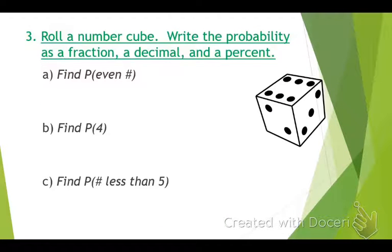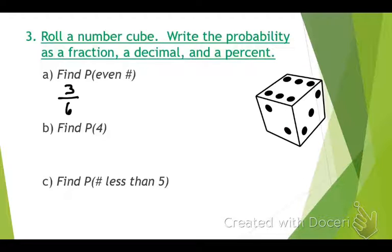Example number three: roll a number cube or dice and write the probability as a fraction, decimal, and percent. What is the probability of rolling an even number? There are six numbers on the dice. The even numbers are two, four, and six — so three out of six, which simplifies to one half. This is theoretical probability because we're just figuring out what we think might happen, but not experimenting yet.